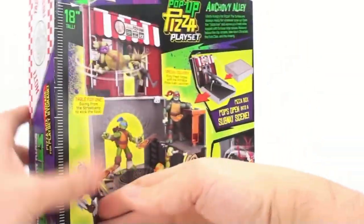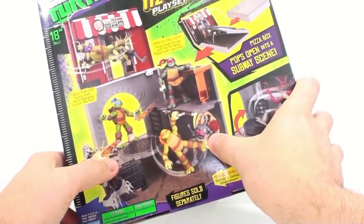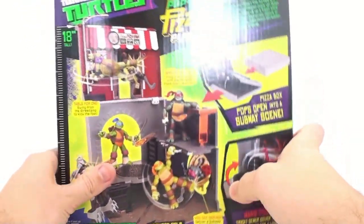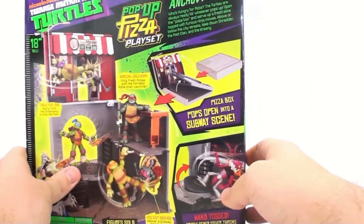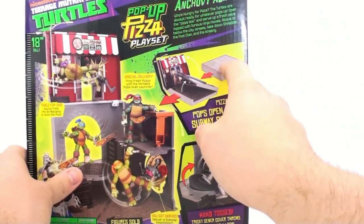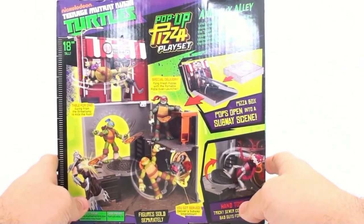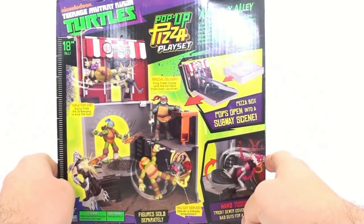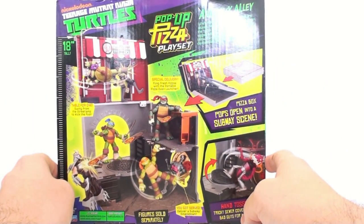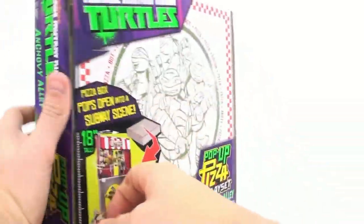Come around here to the back and you see all the play features. A bigger image down here of what's really going on. See the turtles having fun. It does come with an oven launching pizza thing, really kind of funny. It's a pizza box that pops up. And up here at the top, it says who's hungry for pizza? The turtles are always ready for whatever pops up. Open the pizza box and serve up a fresh slice topped with furious ninja moves. Above or below the city streets, take down Shredder, the Foot Clan, and the Krang.